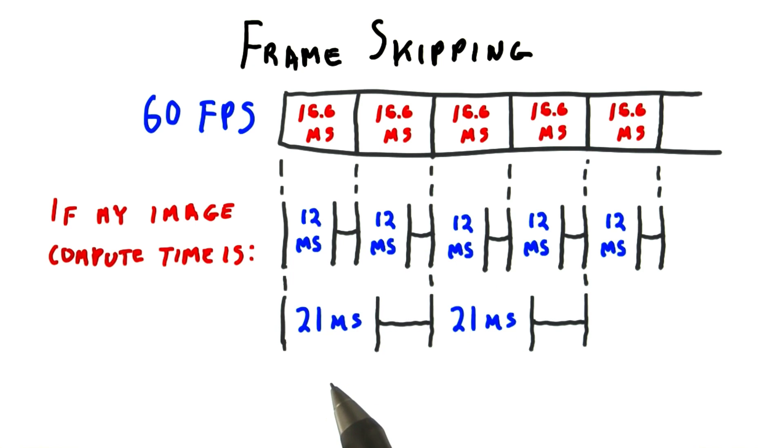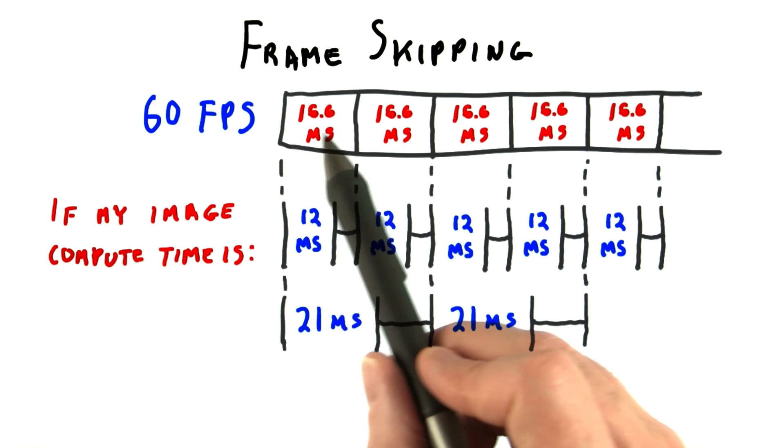If the image takes, say, 21 milliseconds, this is longer than the 60 frames per second rate.